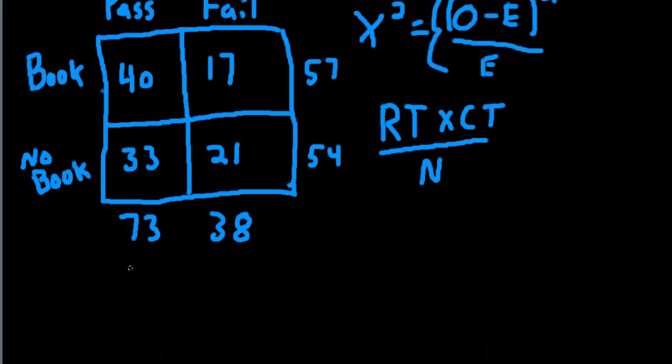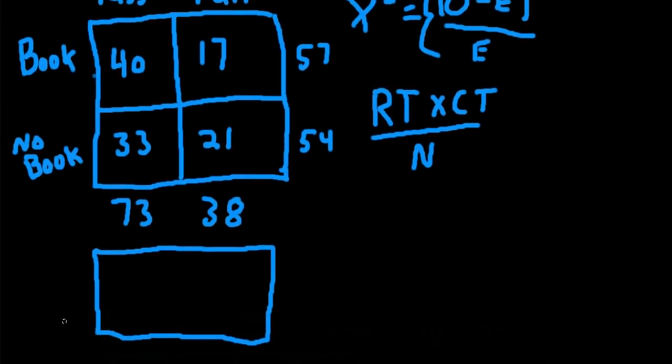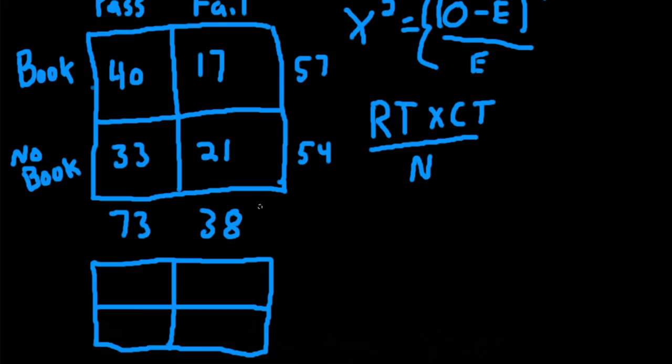So we can go ahead and compute the expected values. I'll make another two by two table to plug in our expected values. So if we take the row total for the first row, which is 57, and multiply it by the column total, which is 73, and then divide it by the overall total, the overall total is 111 in this example. So we take 73 times 57, and divide it by 111. We're taking 73 times 57, and dividing by 111, the expected value under, if these variables are independent, would be 37.49.